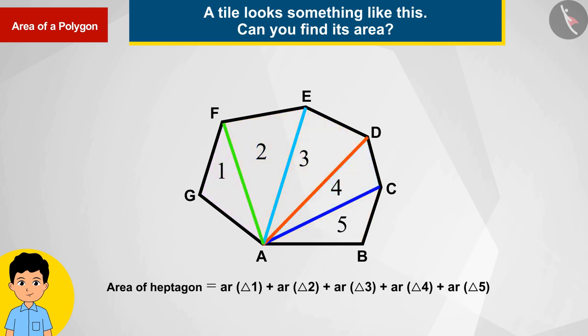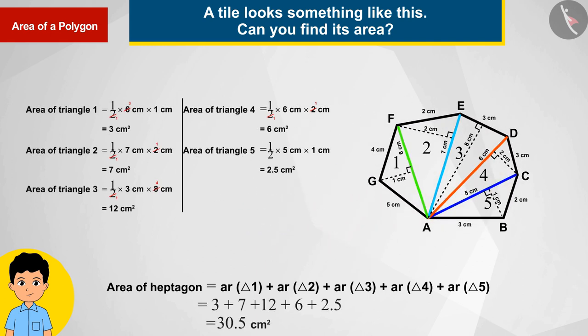Let's say that the measurements of these seven triangles are as follows. According to which by calculating something like this, he finds the area of heptagon which is 30.5 square centimeters.